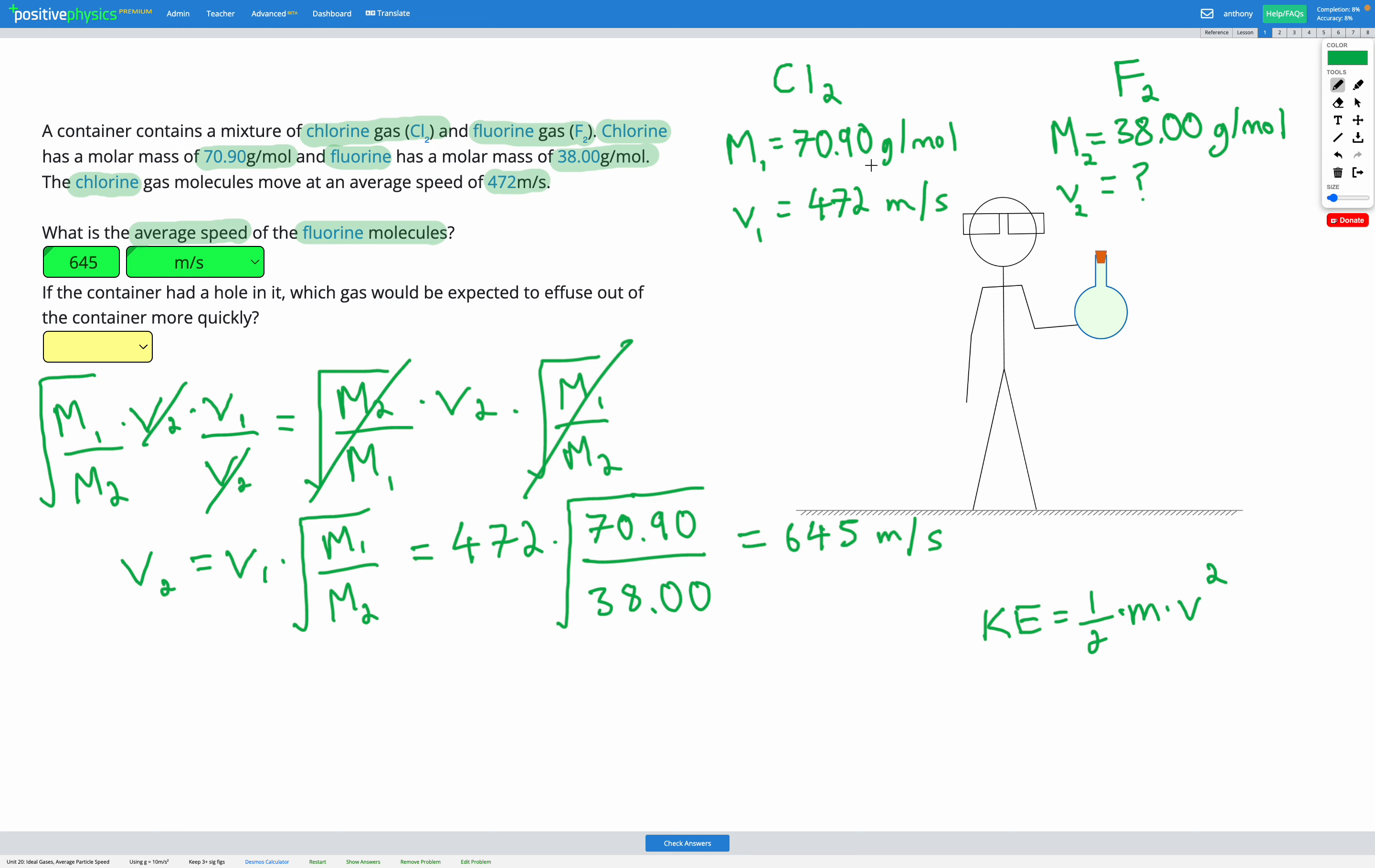So if we have a greater molar mass, that means our velocity must be less. On the other hand, if we have a smaller molar mass, our velocity must be higher or faster. So that makes sense because fluorine has a smaller molar mass, but we found a higher average speed. So that all checks out sensically as well.